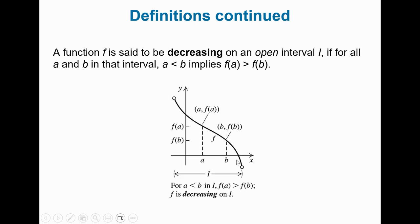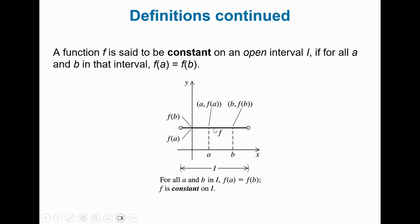Decreasing is just the opposite — the graph is going downhill. F of b is going to be a smaller number than f of a; this value is smaller than that value. Decreasing means going downhill. And constant means it's just a horizontal line — not going uphill or downhill. A constant function, for instance: f of x equals 8, f of x equals 3, f of x equals negative 9. It doesn't go uphill or downhill; it's a horizontal line.